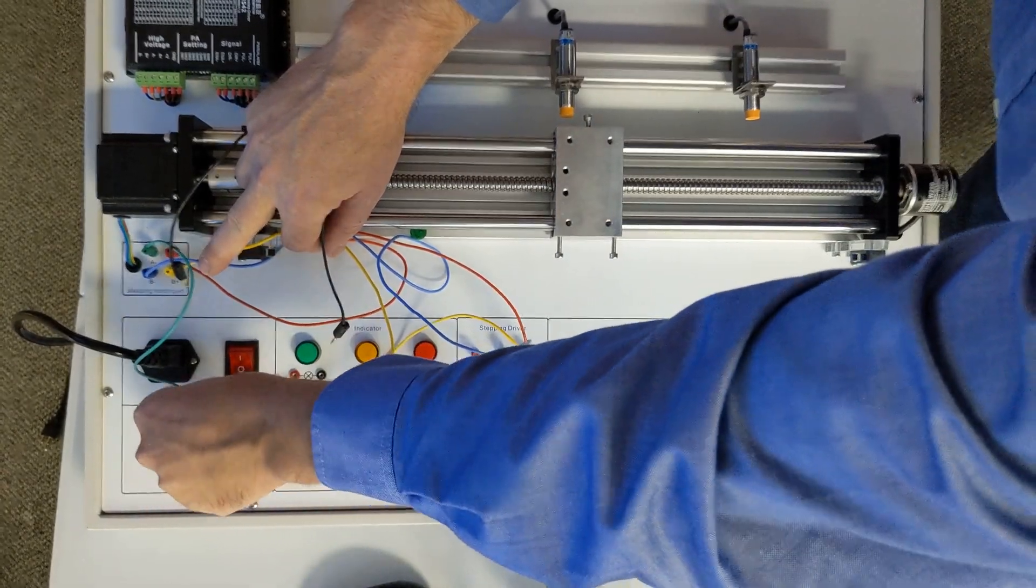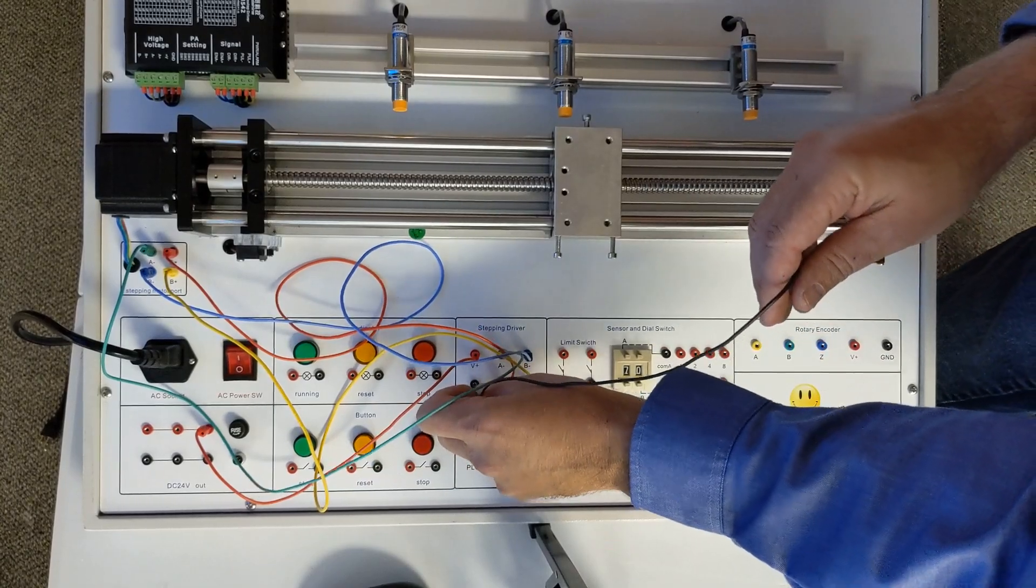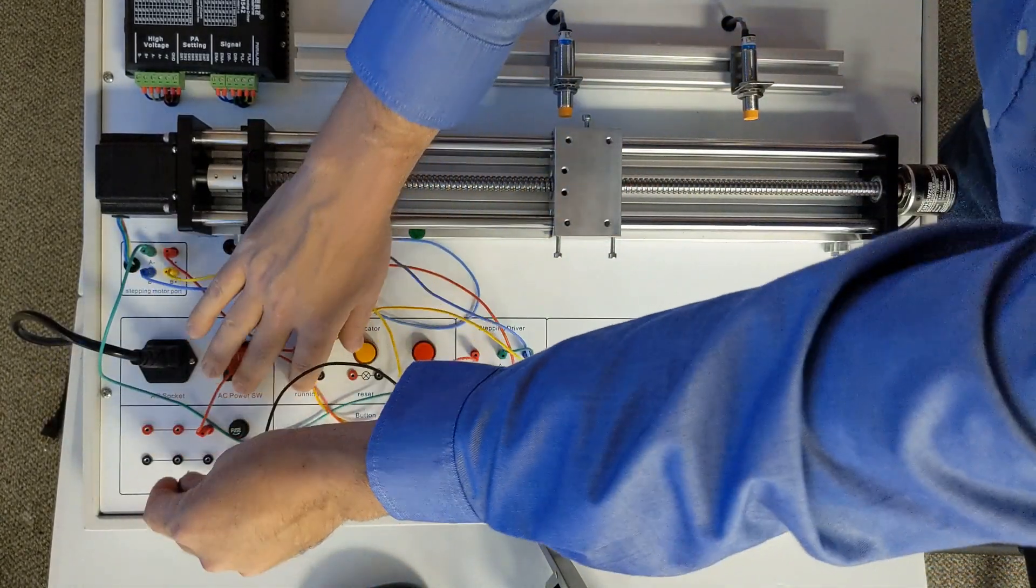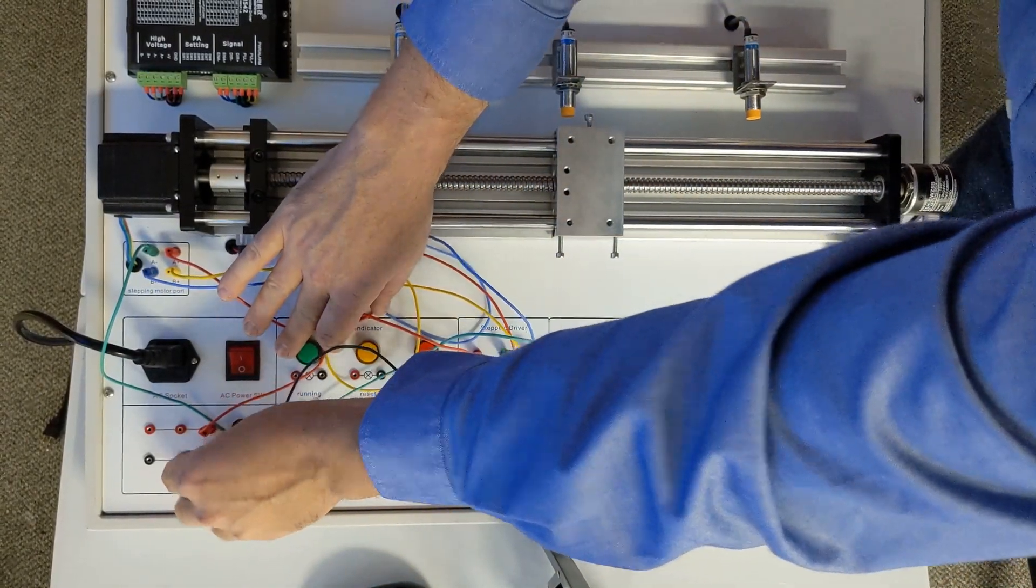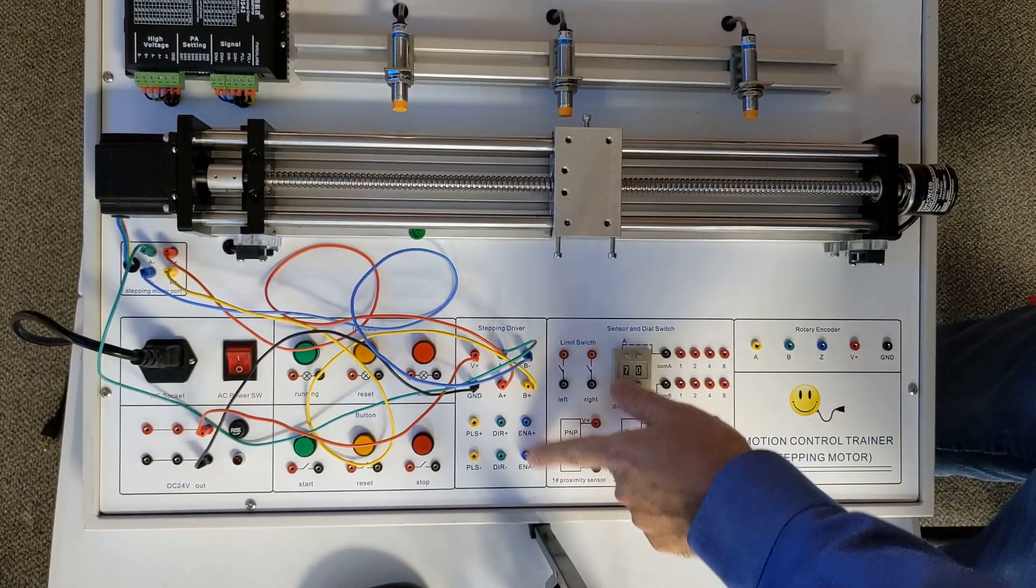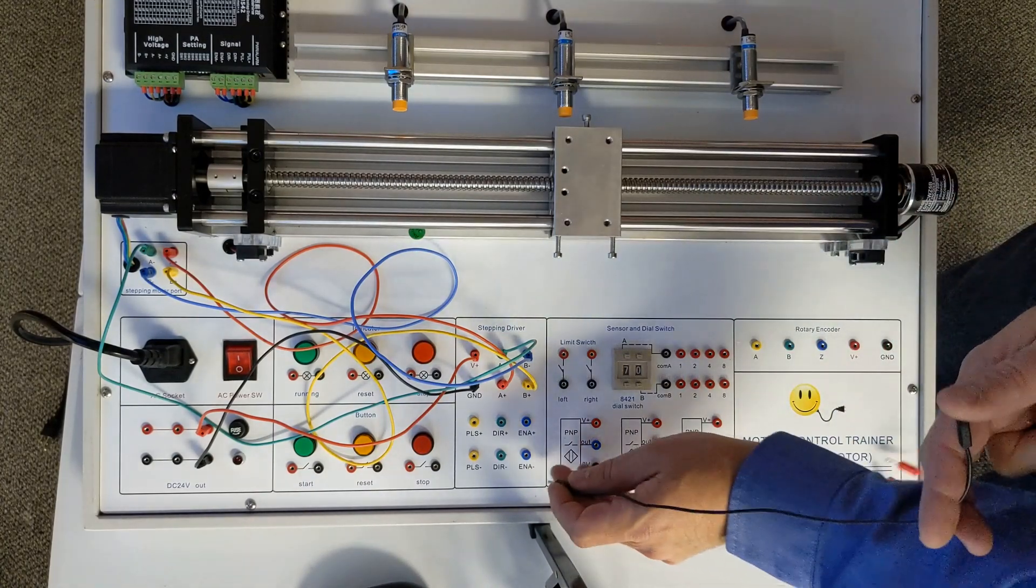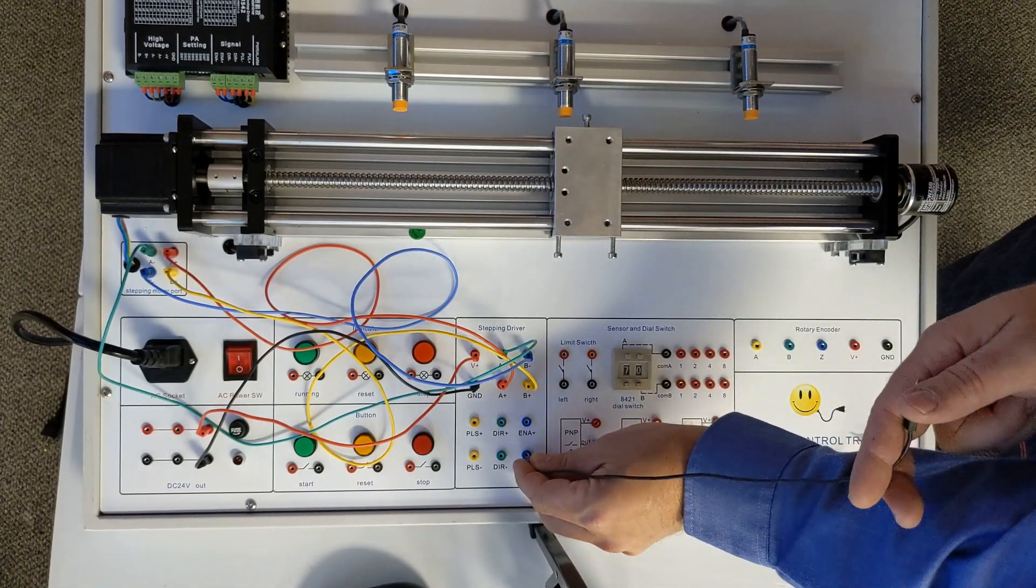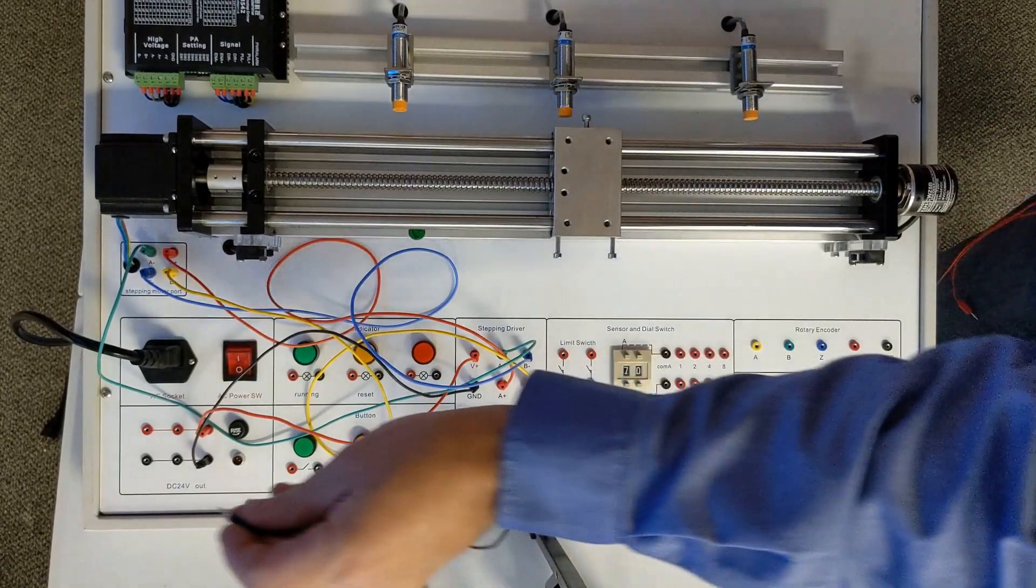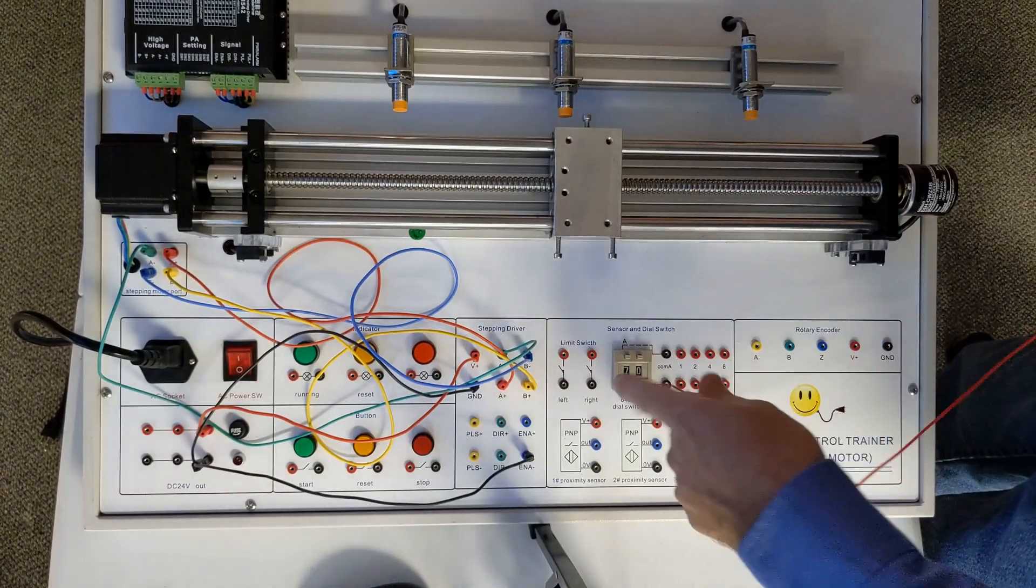Then we're going to power our stepper motor by putting B plus of the stepper motor to our DC 24 volt out red, and then we're going to put the ground to the black of the DC 24 volt out.